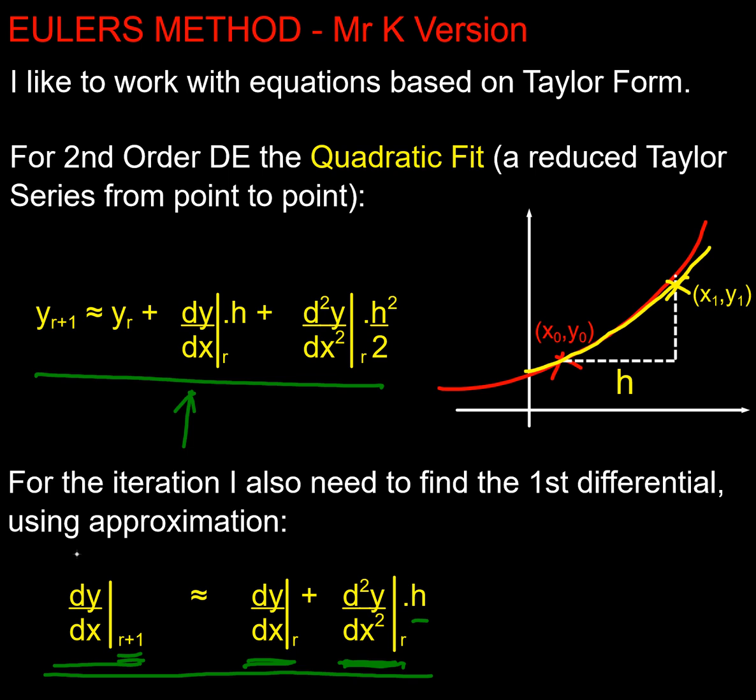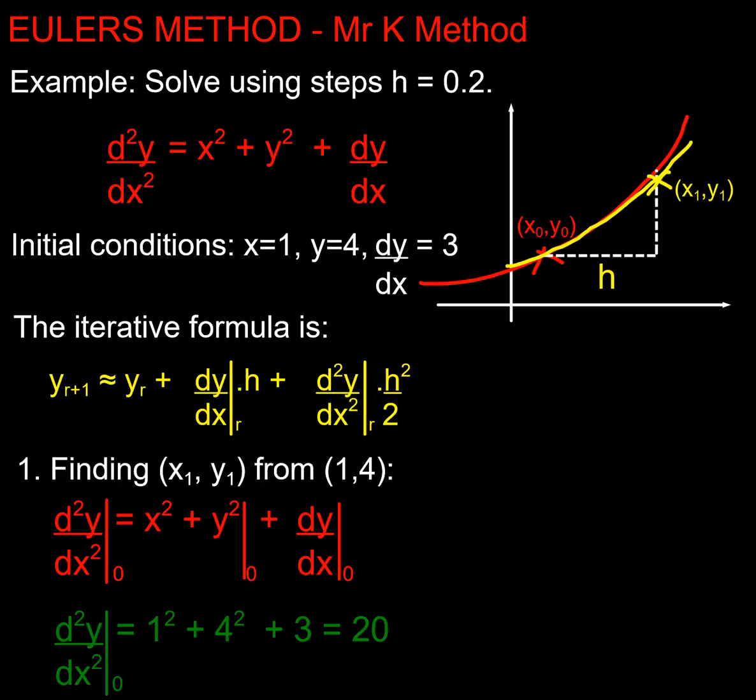So, effectively, that's m_(r+1). That's m_r. And, of course, this second differential is dm/dr, m being gradient. At r times h, whatever the distance is. So, it's the same sort of thing with gradients. Okay, now let's use it. I'm going to use my method.